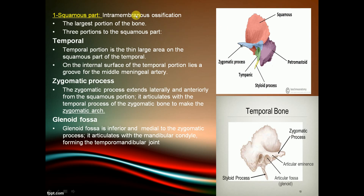The temporal bone has four portions: the squamous portion, the petrous portion, the tympanic portion, and the styloid portion. The squamous part undergoes intramembranous ossification and is the largest portion. On the internal surface of the squamous part, there is a groove for the middle meningeal artery.